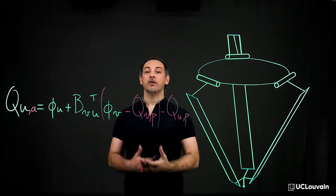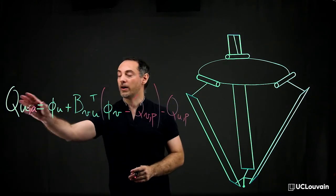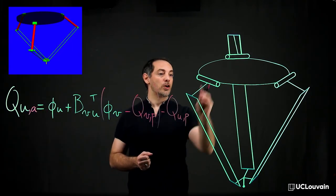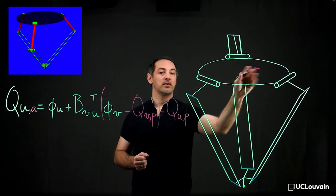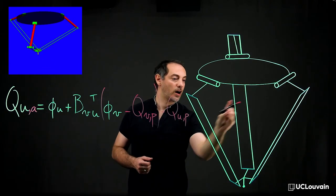In the case of the delta robot, the three actuated torques Q_ua are those of the motors located on the roof and actuating the three arms.